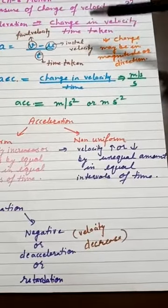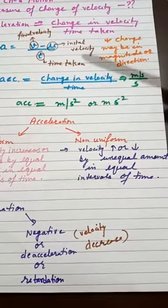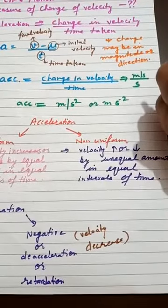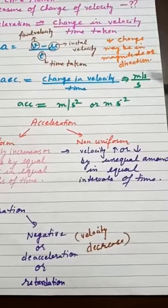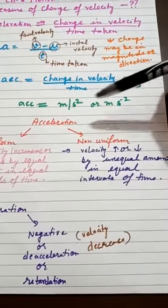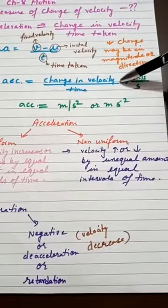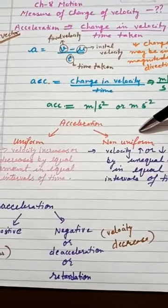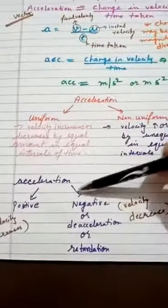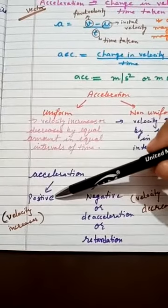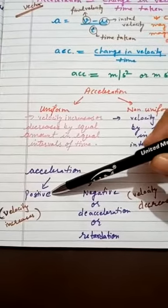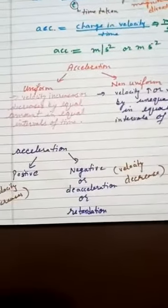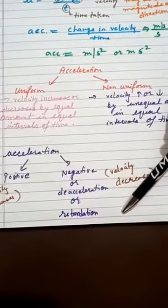Non-uniform acceleration is when velocity increases or decreases by unequal amounts in equal intervals of time. For example, suppose the speed goes 40 km/h, then 50 km/h, then 30 km/h, then 50 km/h — the time interval is the same but velocity changes unequally. Also, acceleration may be positive or negative: when velocity increases, acceleration is positive; when velocity decreases, acceleration is negative.